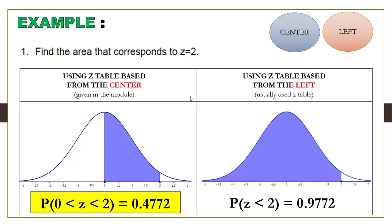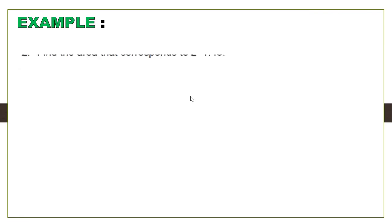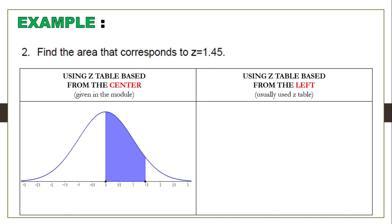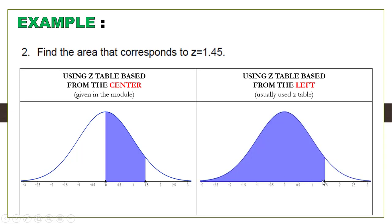Now let us have another example. Suppose we have to find the area that corresponds to Z equal to 1.45. Using the center-based Z-Table, this means the area from 0 to 1.45. On the other hand, if we use the Z-Table based from the left, it covers from the left to 1.45.